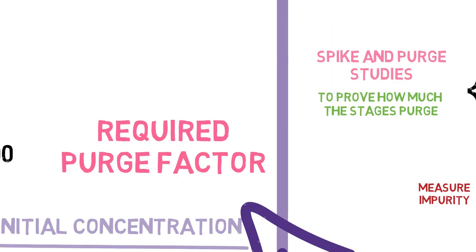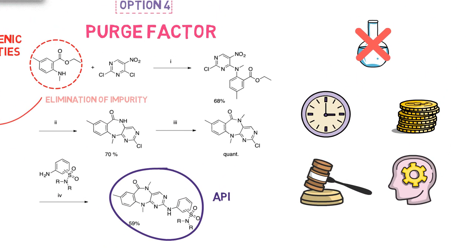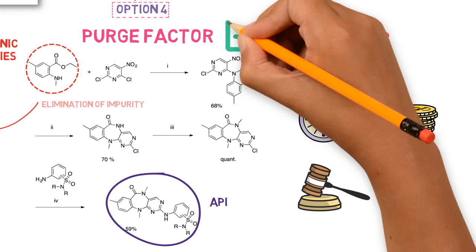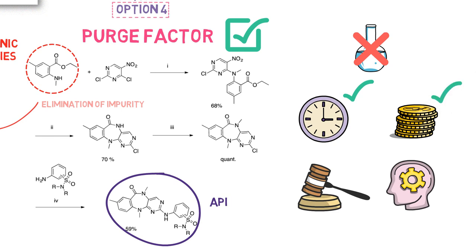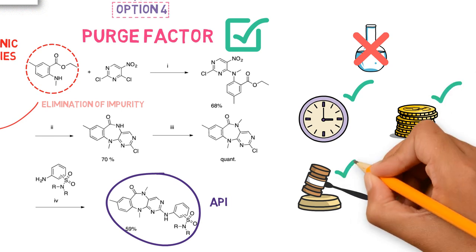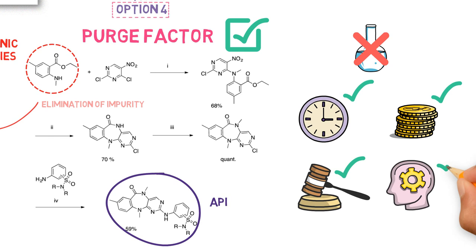Either way, the advantages of the purge factor are evident. Besides saving a lot of time and resources which would be spent in analytical testing, we also have a strong technical and regulatory argument for the safety of the API regarding mutagenic impurities.